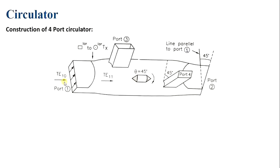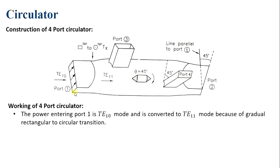For the working: when input is provided at port 1, we only get output at port 2. Port 1 is excited with a TE10 mode, and as the signal passes from the rectangular to the circular waveguide through the circular transition, it is converted into TE11 mode. The orientation of this TE11 mode is perpendicular to port 3, so output at port 3 is zero.